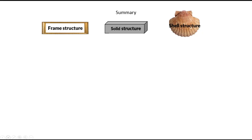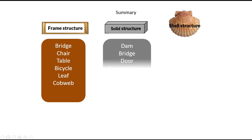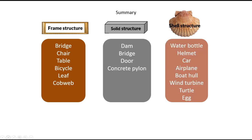In summary, examples of frame structures are bridges of the suspension variety, chairs and tables, bicycles, leaves, cobwebs, and now we can add the human frame and apartment buildings. Examples of solid structures are dams, bridges, doors, wooden doors, and concrete pylons.